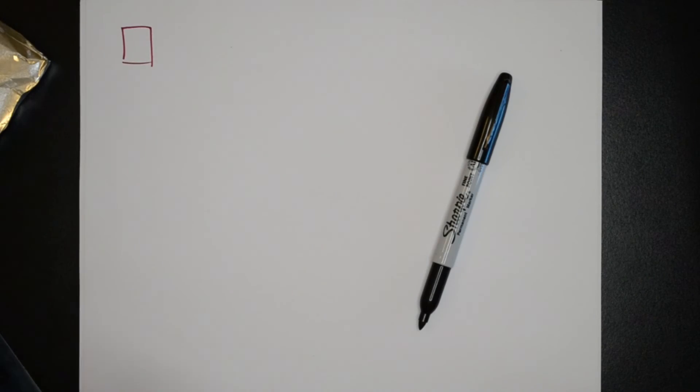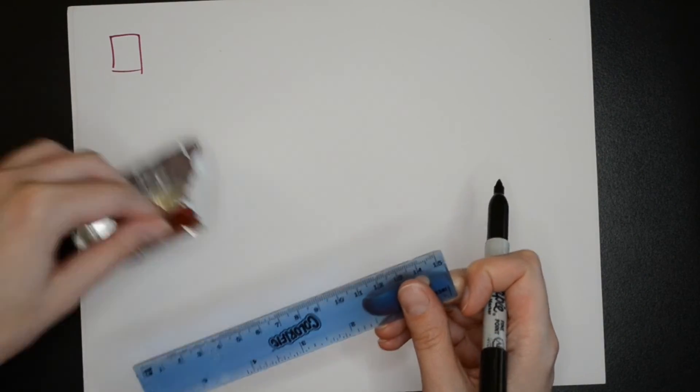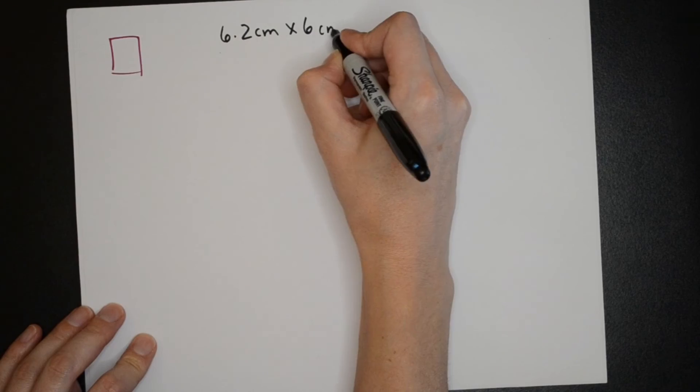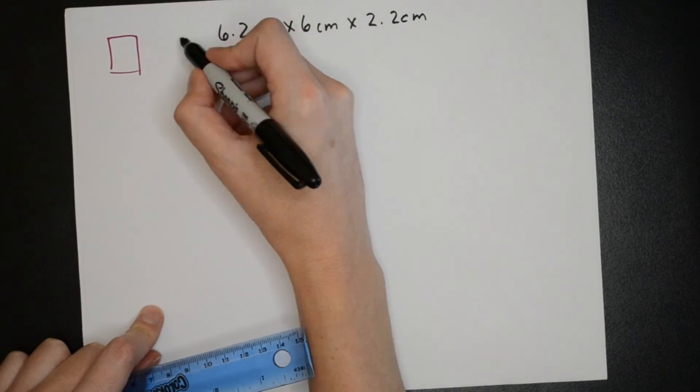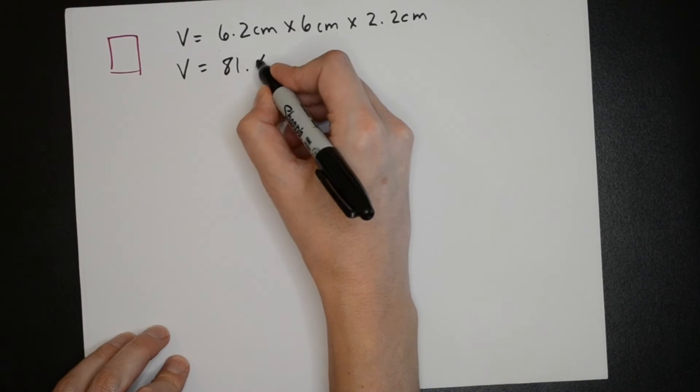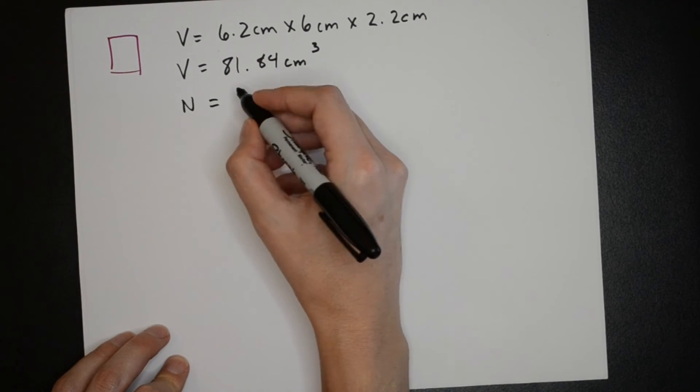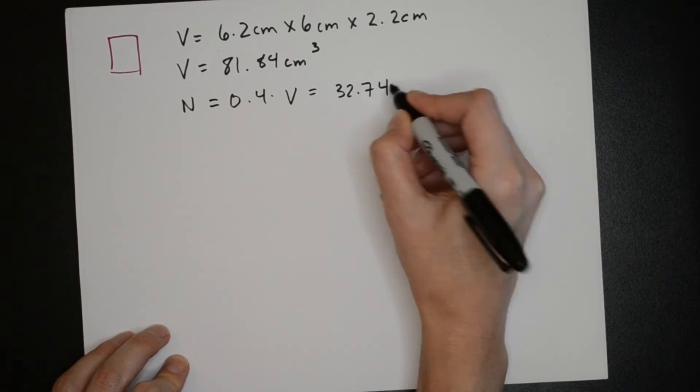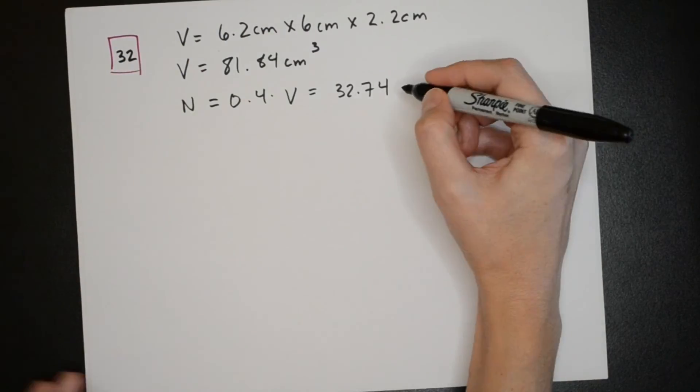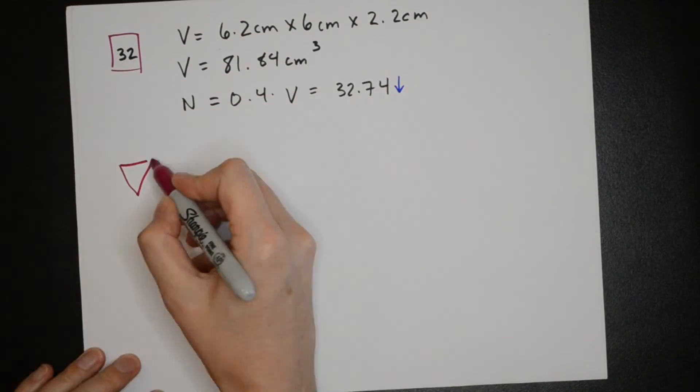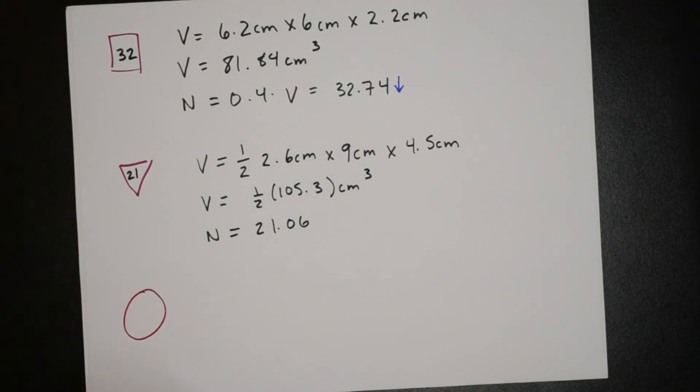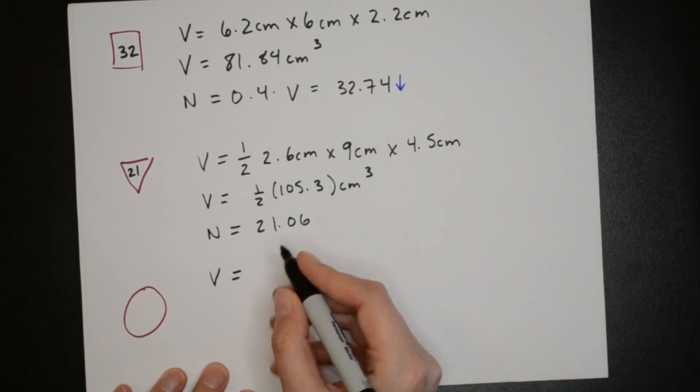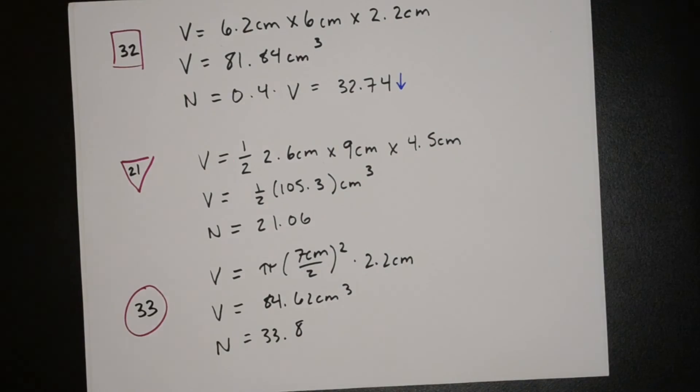Since the number of pennies didn't quite match my predictions I decided to measure the boats I made to get a more accurate volume for each one. After doing this and plugging those values back into the equation for the number of pennies I end up with two additional pennies for the cube so an estimate of 32, five less pennies for the canoe which brings it to 21, and three additional pennies for the sphere which brings it up to 33.